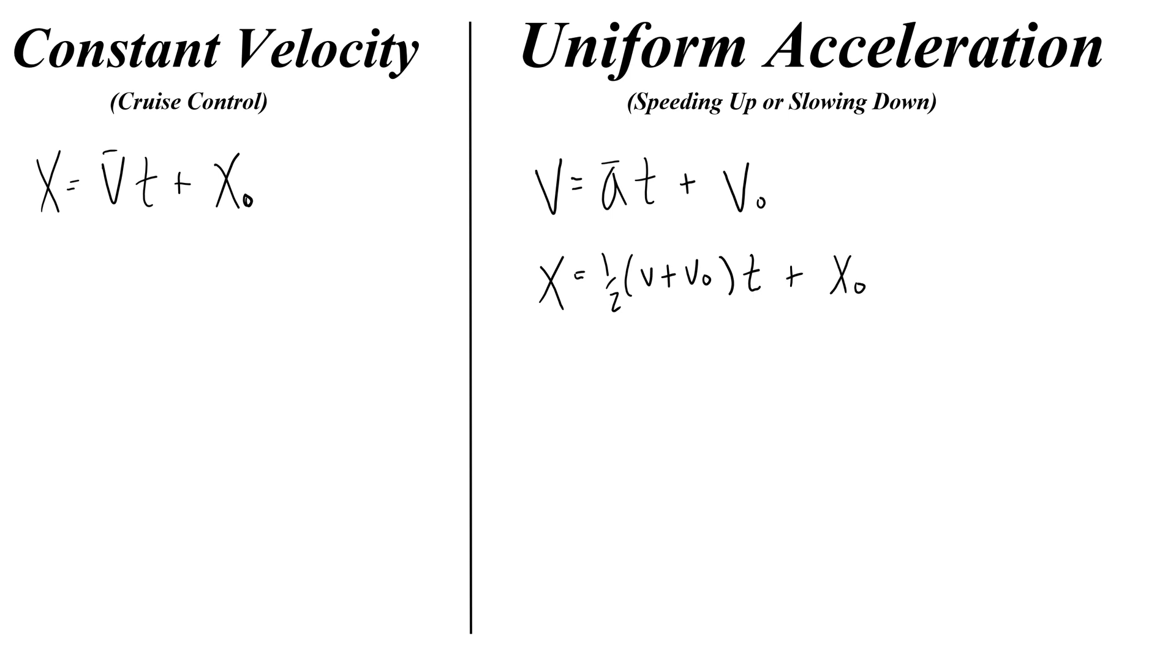One is just half of v plus v-naught times t. That's the average velocity times time plus the initial position. The other equation we have for position is one-half of the acceleration times time squared plus the initial velocity times time plus the initial position.